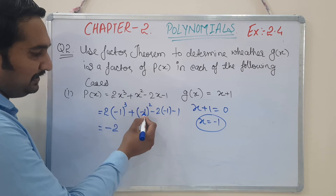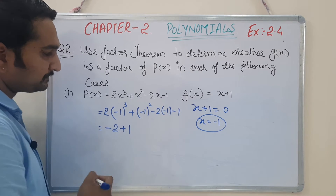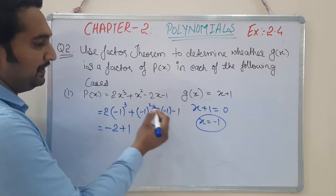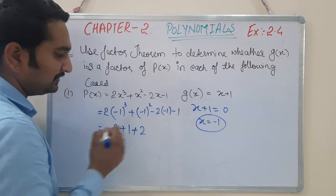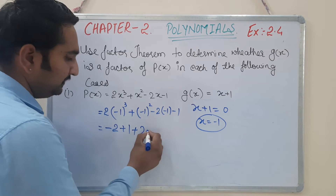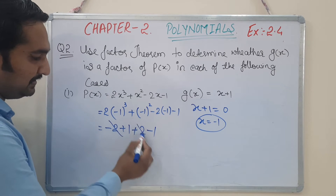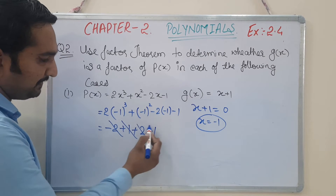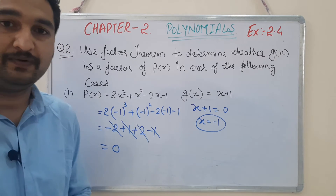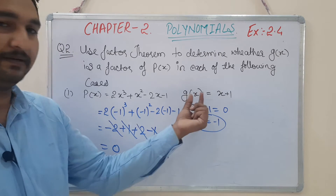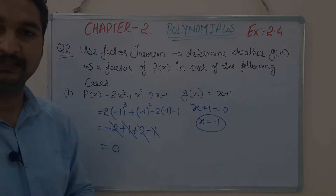(-1)² is positive, so that gives +1. Simplifying: minus converts to plus, so the final expression becomes: +2 and -2 get cancelled, and +1 and -1 get cancelled. Our final answer is 0, so we say that g(x) is a factor of p(x).